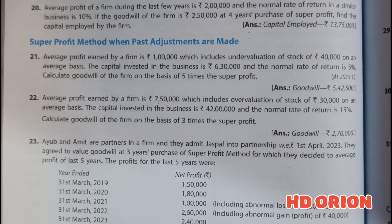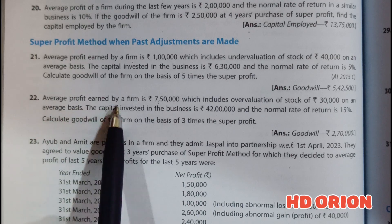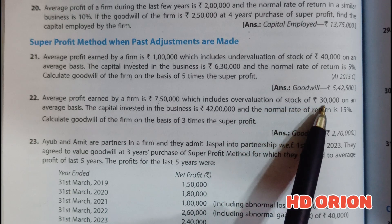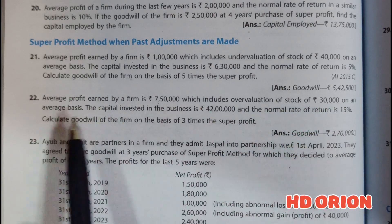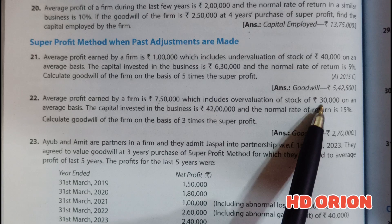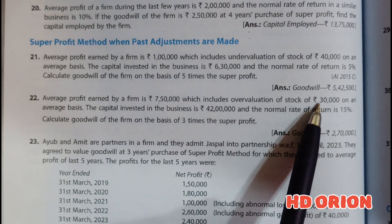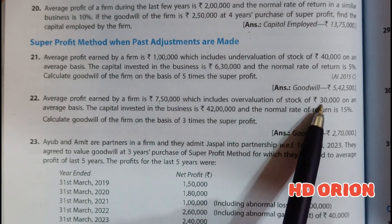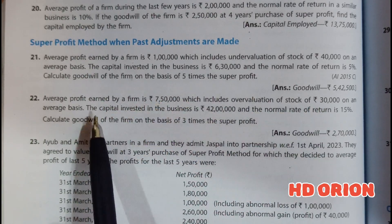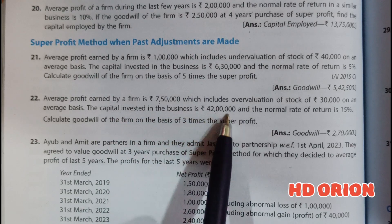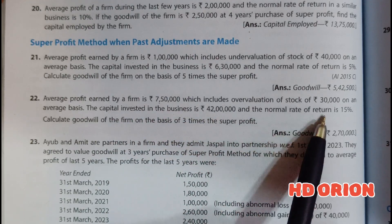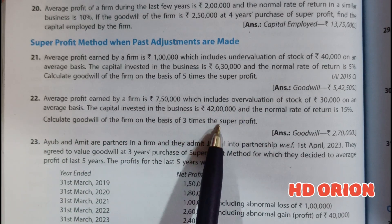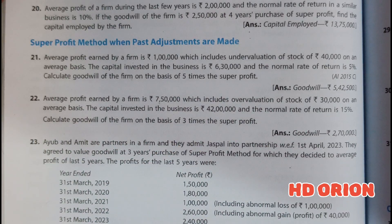Question Number 22: Average profit earned by a firm is ₹7 lakh 50,000, which includes overvaluation of stock of ₹30,000 on an average basis. Because it is overvalued, our profit has increased by the overvalued amount of ₹30,000. The capital invested in the business is ₹42 lakh and the normal rate of return is 15%. Calculate goodwill on the basis of three times the super profit.